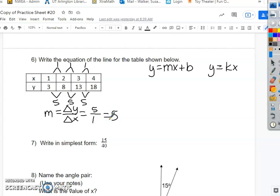So remember, this is always m, and sometimes it is k. We have to figure out if it's k. So we do have a constant rate of change. Now we're going to see if it goes through 0, 0 to figure out if it's proportional.